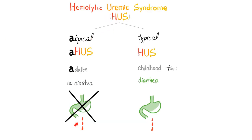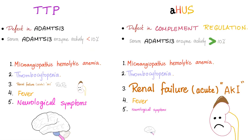Hemolytic uremic syndrome has atypical or diarrhea-negative and typical or diarrhea-positive. Now, TTP versus atypical HUS: in TTP, the defect is in ADAMTS-13, and serum ADAMTS-13 enzyme activity is less than 10%. In atypical HUS, the defect is not in ADAMTS-13 — it's in complement regulation. Sometimes we have a complement gene mutation, other times antibodies. When complement is hyperactive, it destroys everything. In atypical HUS, ADAMTS-13 activity is actually normal, usually more than 10% — a big difference from TTP.